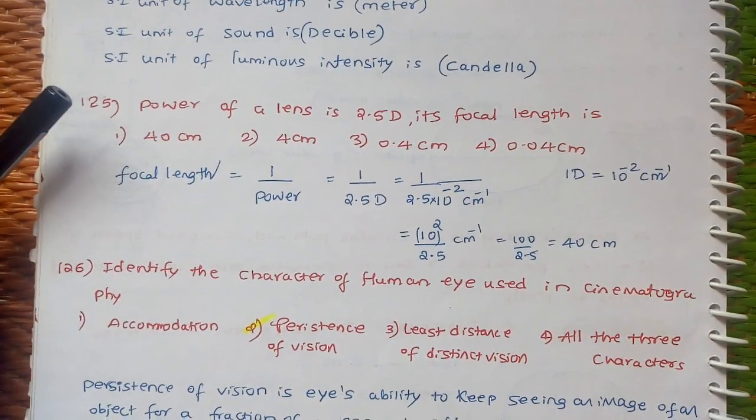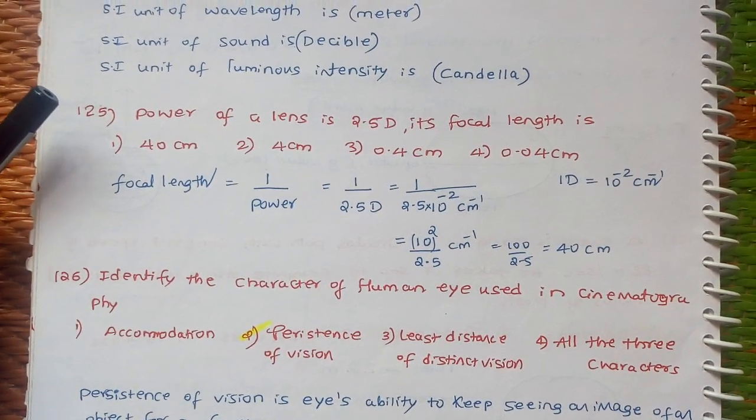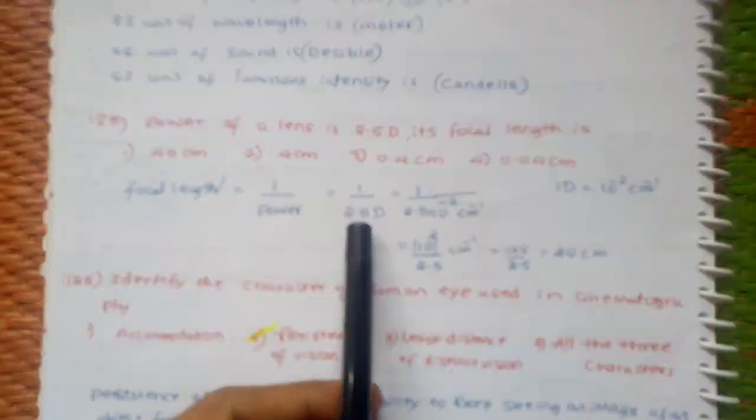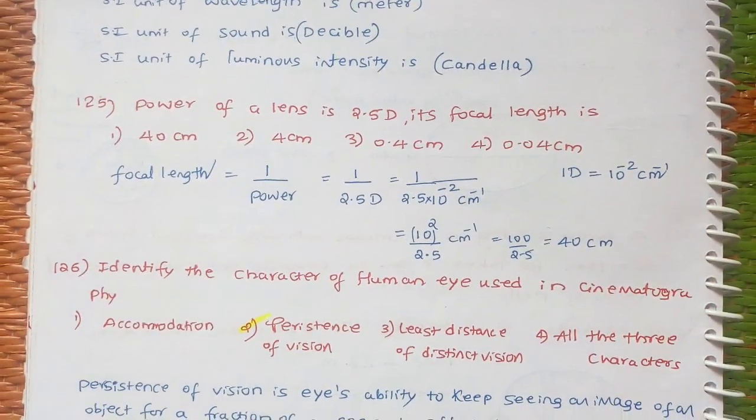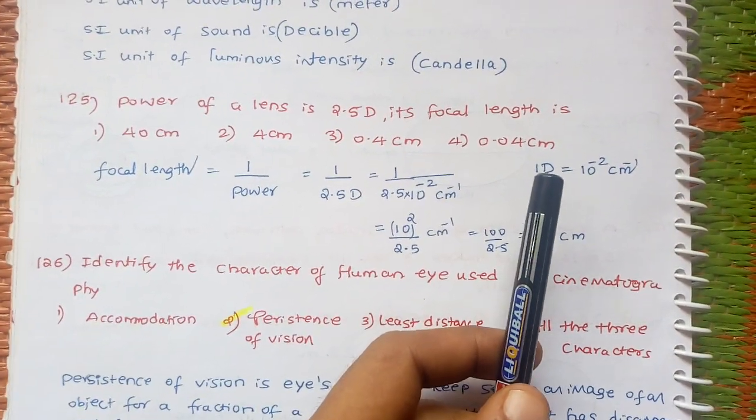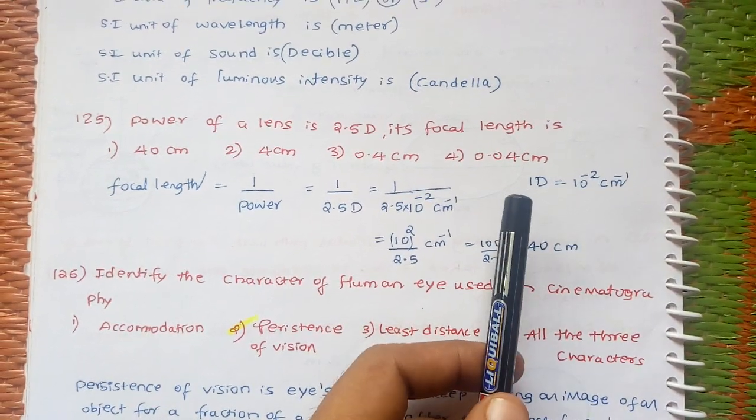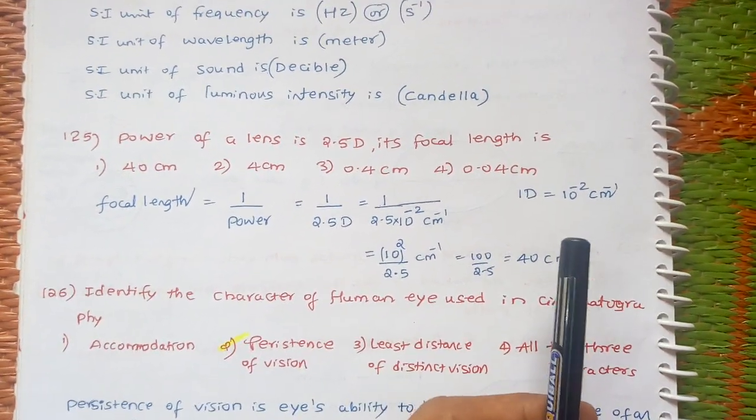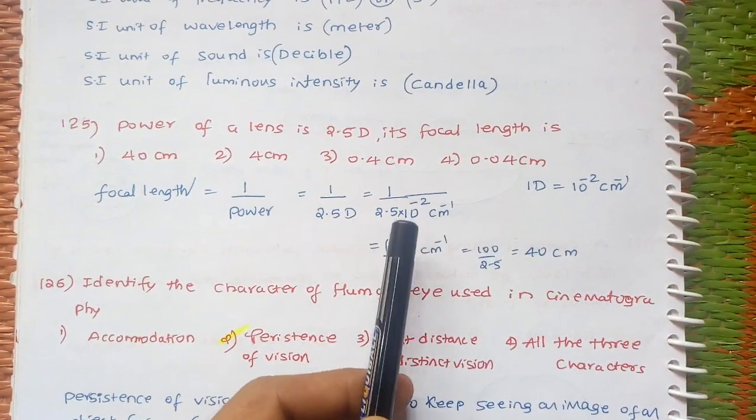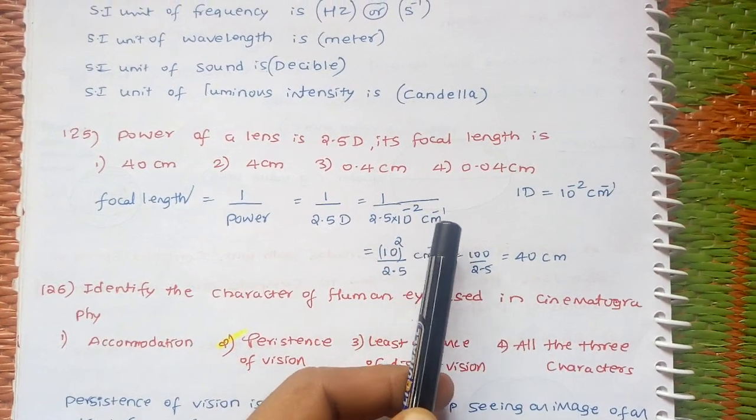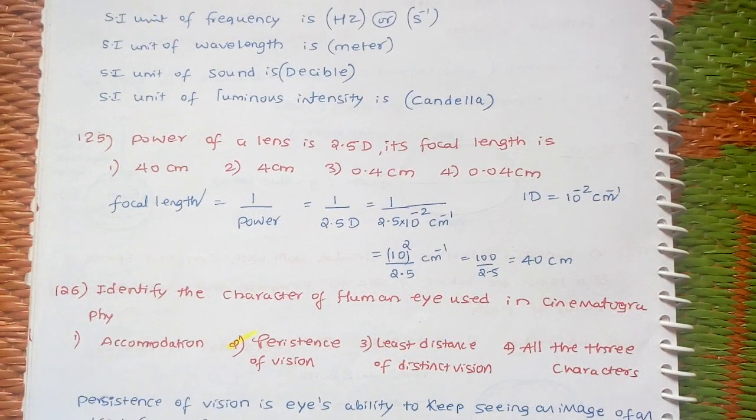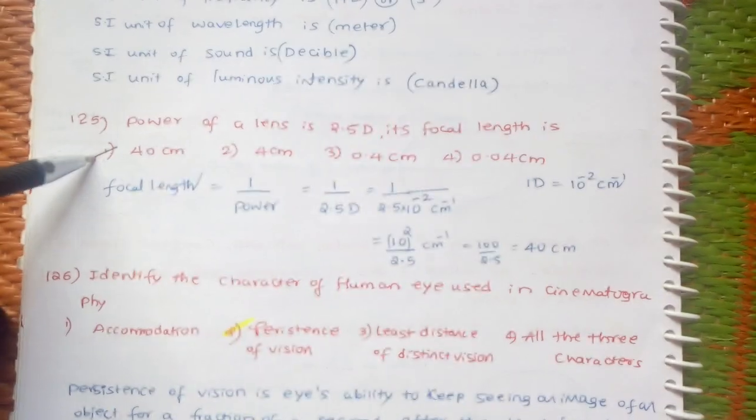This one: find the power of a lens, 5 diopter, its focal length. As you know, focal length is 1 by power. 1 by 2.5 diopter. You have to know that 1 diopter is per meter. In centimeters, 1 diopter equals 10^-2 per centimeter. So 2.5 diopter, in place of diopter we place 10^-2 per centimeter. We will get 40 centimeters. Answer is option A.